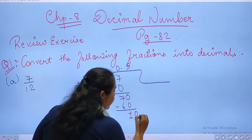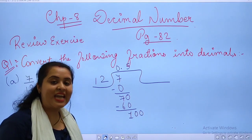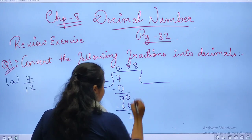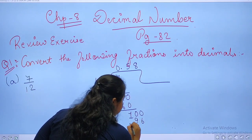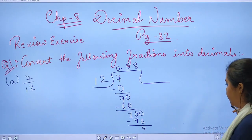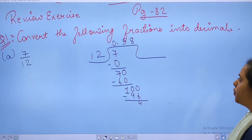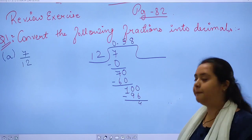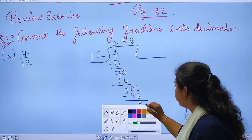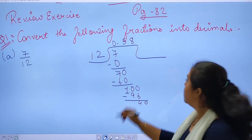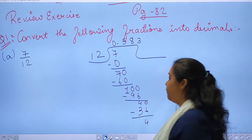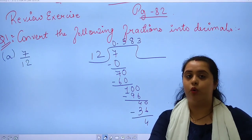Your remainder will be 10. So one more 0 I am going to be placing. 12, 8 times 96. Your remainder will be 4. Again, I can place 0.